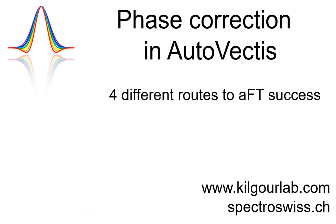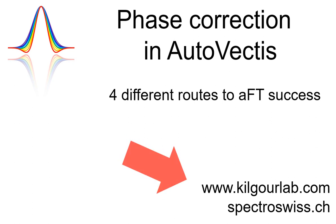And so, that's it. I hope this summary of the four different processing routes you can use to create absorption mode spectra in Autovectus has been useful. And as always, if you have any questions, you can contact kilgowerlab.com directly or the team at SpectraSwiss.